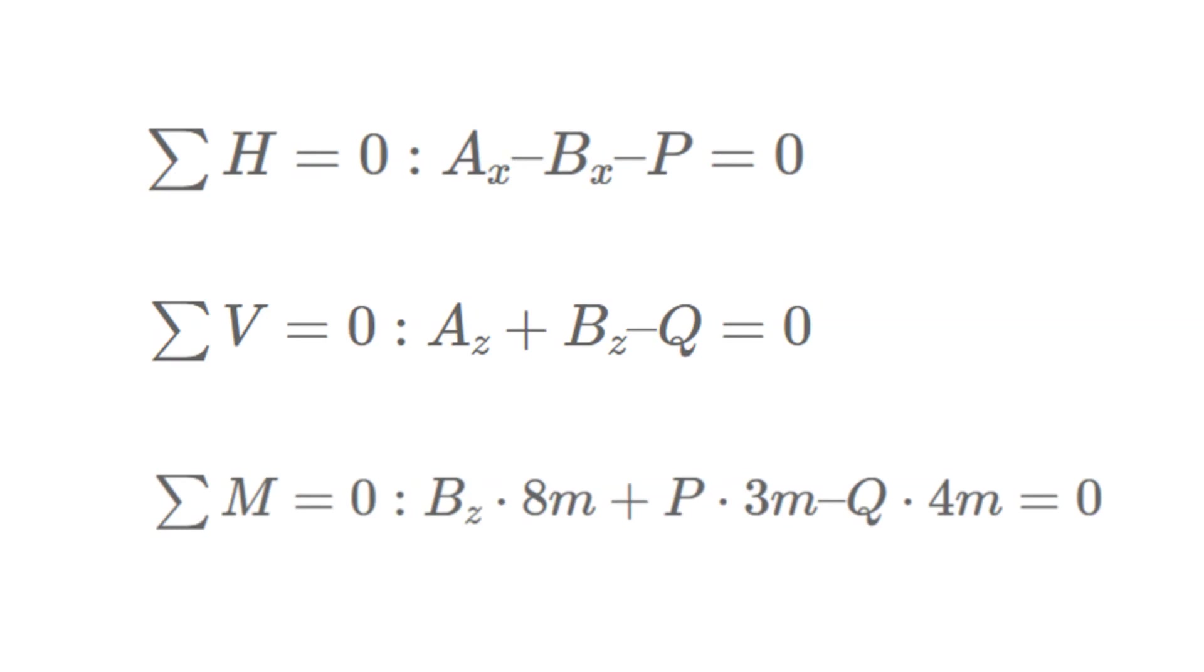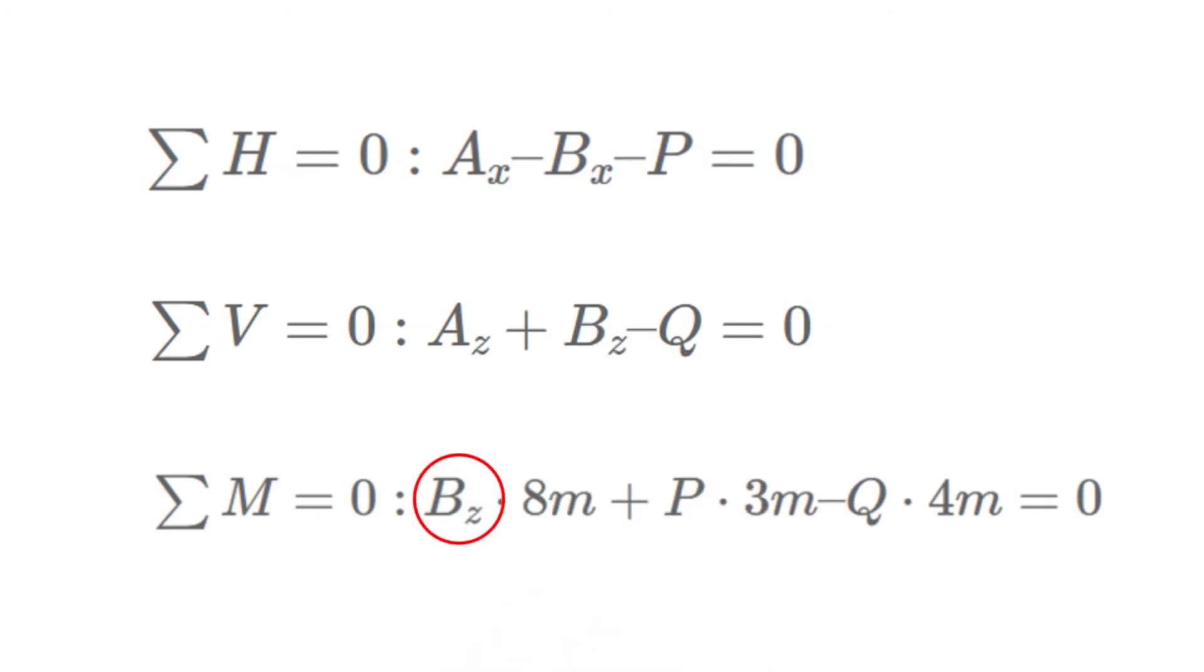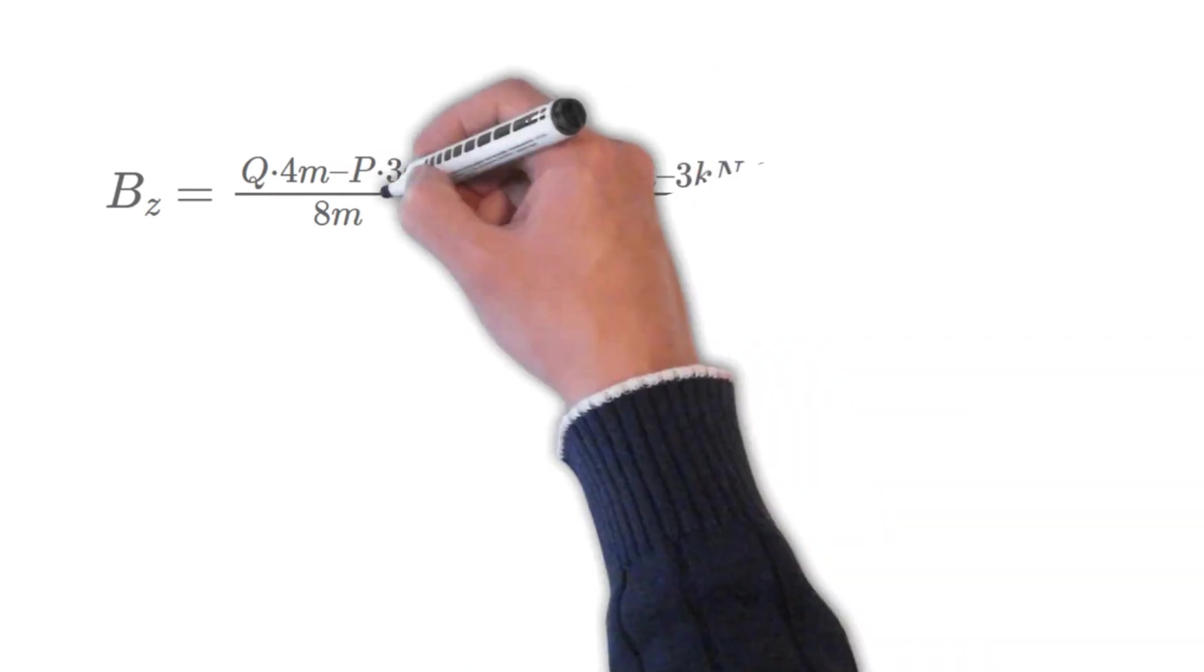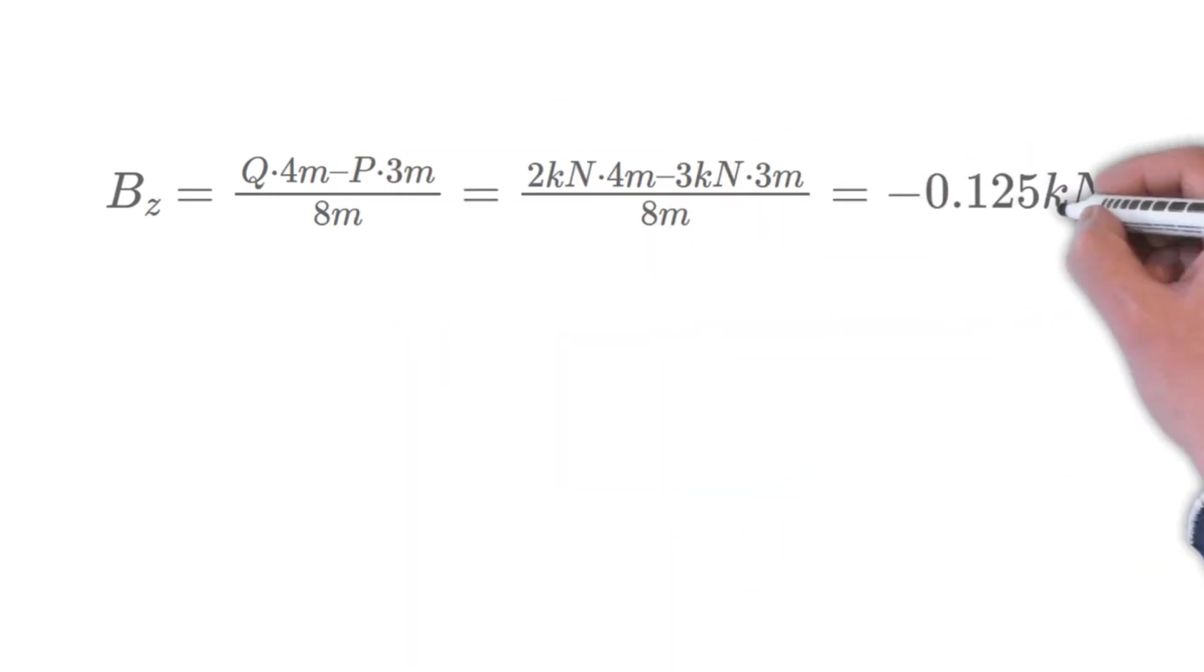Let us know in the comments if you need a video tutorial on how to calculate moments. Now the only equation which only has one unknown is the moment equilibrium. So we solve that first. We solve for Bz. So Bz equals Q times 4 meters minus P times 3 meters divided by 8 meters. And the result is that Bz equals minus 0.125 kN.